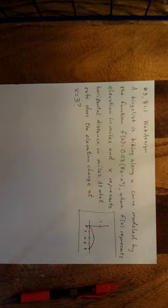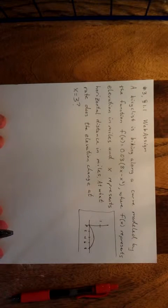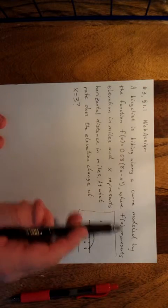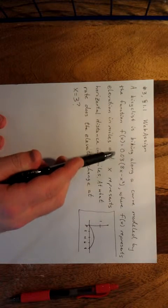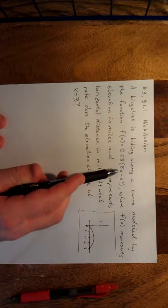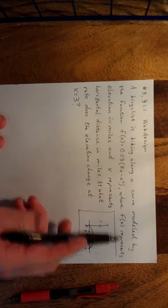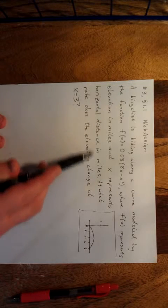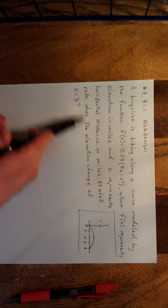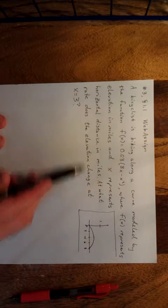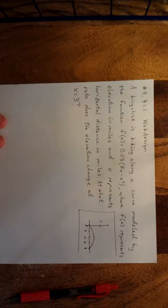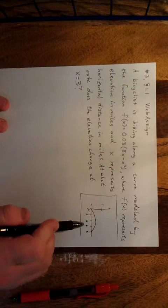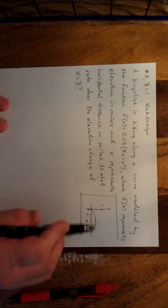The problem given to me was that a bicyclist was biking along a curve modeled by the function f(x) = 0.03 times the quantity (8x − x²), where f(x) represents elevation in miles and x represents horizontal distance in miles. At what rate does the elevation change at x equals 3? It also provided a picture showing what the field looks like.